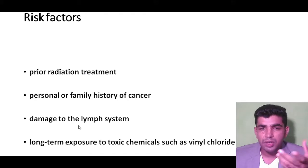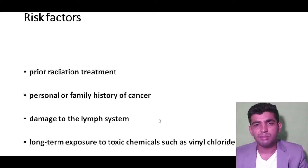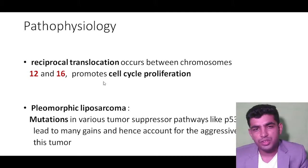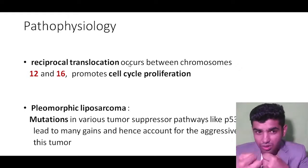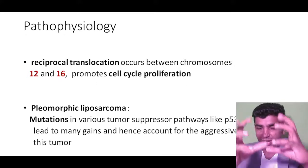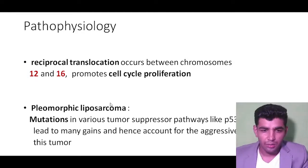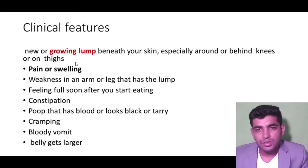Risk factors for liposarcoma include family history, damage to the lymphatic system allowing spread, and exposure to toxic chemicals such as vinyl chloride. The pathophysiology involves gene mutation — specifically a reciprocal translocation between chromosomes 12 and 16, promoting cell cycle proliferation and increased fat formation. Pleomorphic liposarcoma involves mutations in p53, NF1, and RB1 tumor suppressor genes.